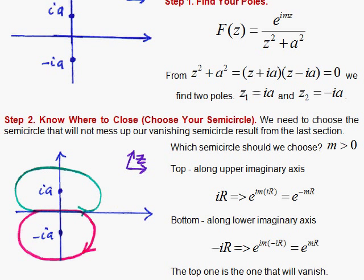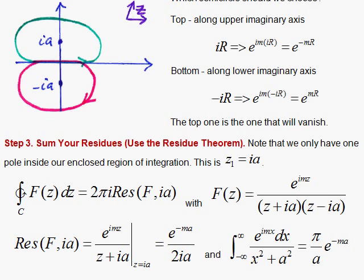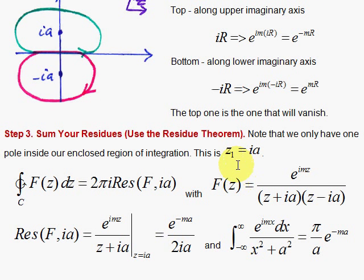and that means we're going to have one pole, the ia. And step three, sum your residues. Use the residue theorem. So that pole up here is ia. So therefore, the integral will be 2 pi i times the residue of the function evaluated here for the z1 equals ia.